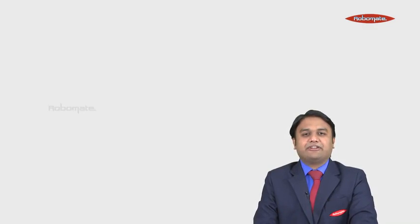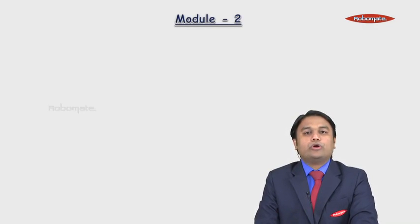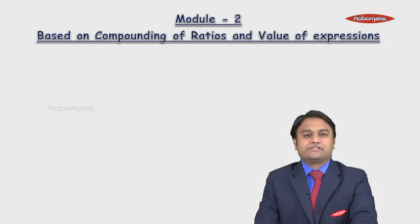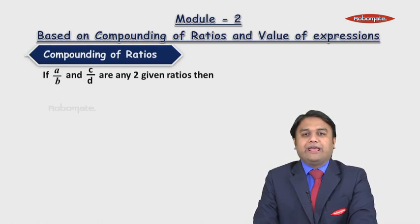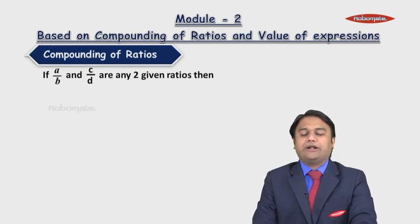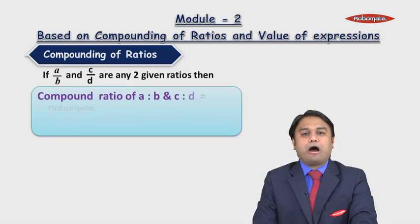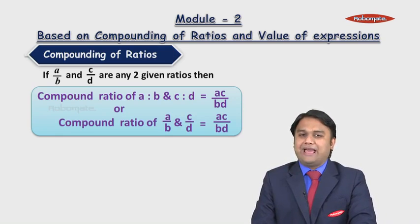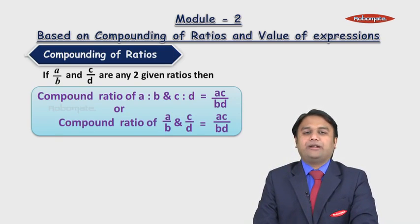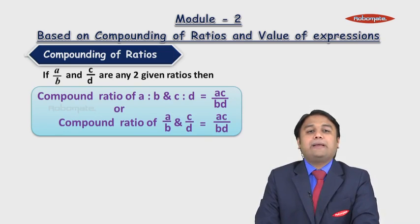Let us start with module number two, which is based on compounding of ratios and value of expressions. Let us first understand compounding of ratios. If a upon b and c upon d are any two given ratios, then the compound ratio of a is to b and c is to d is equal to ac upon bd.